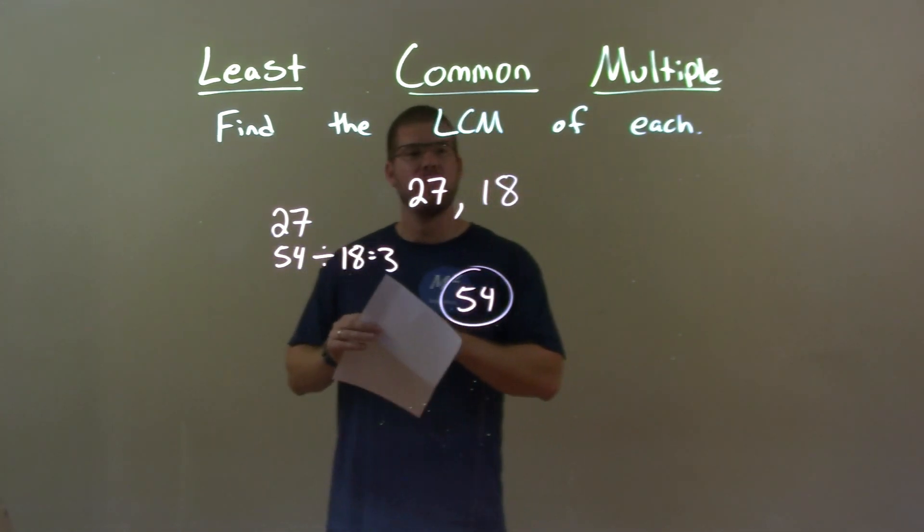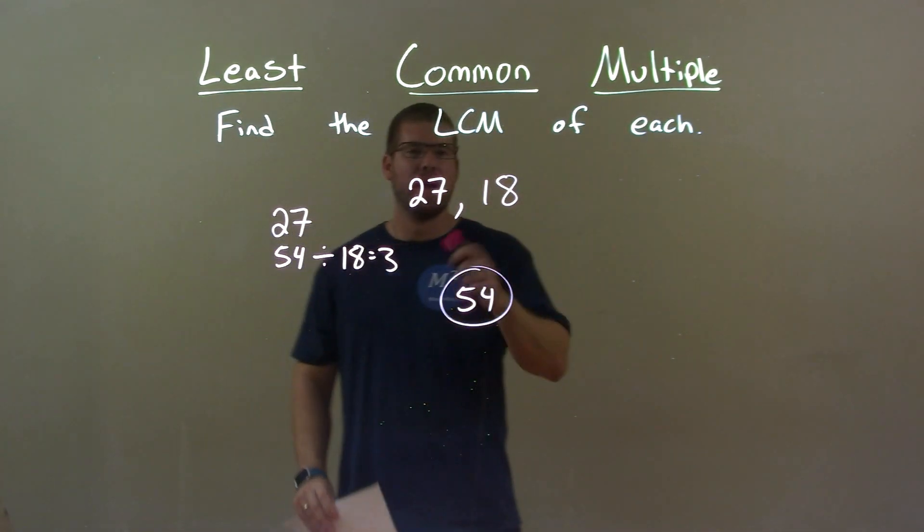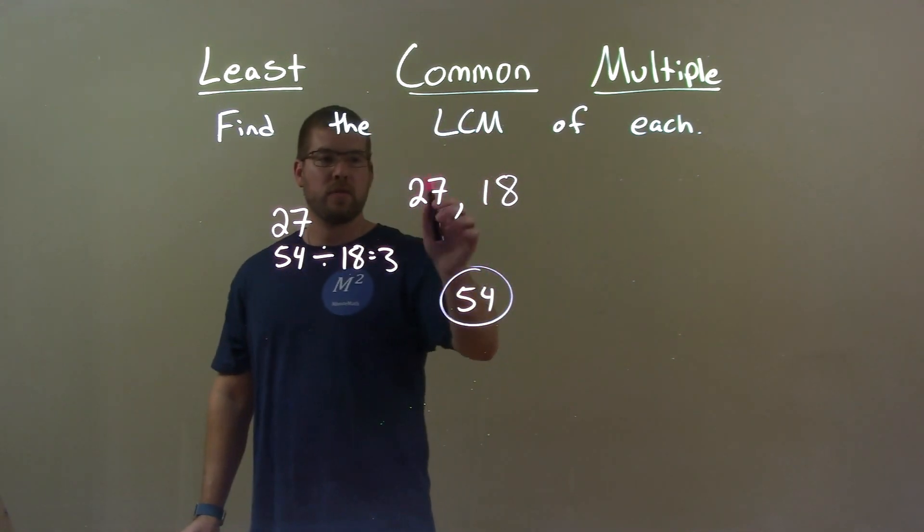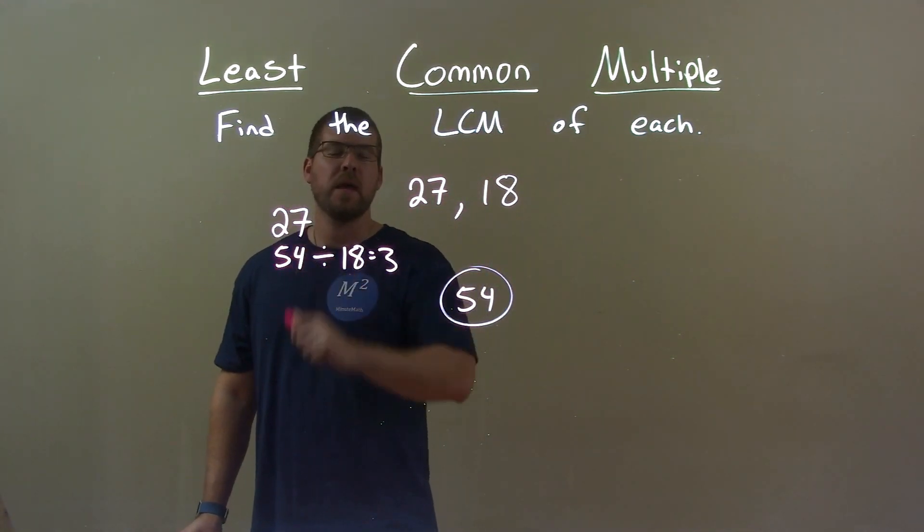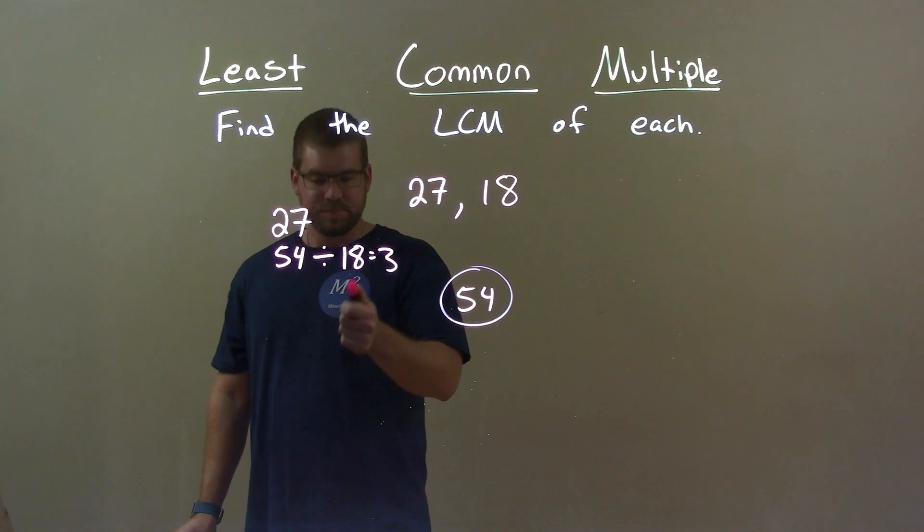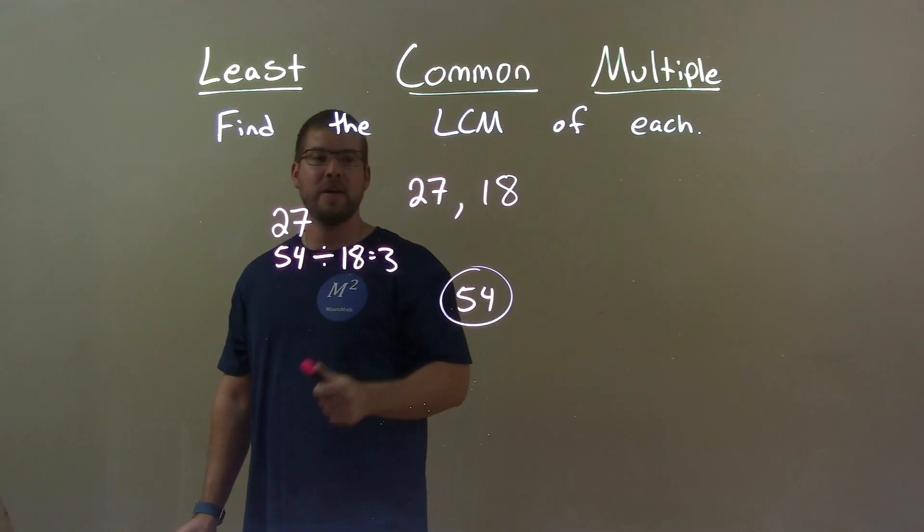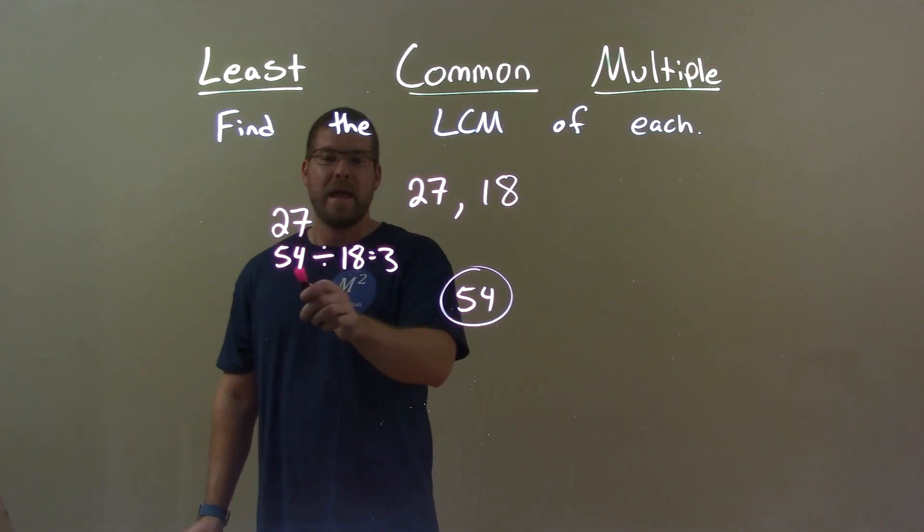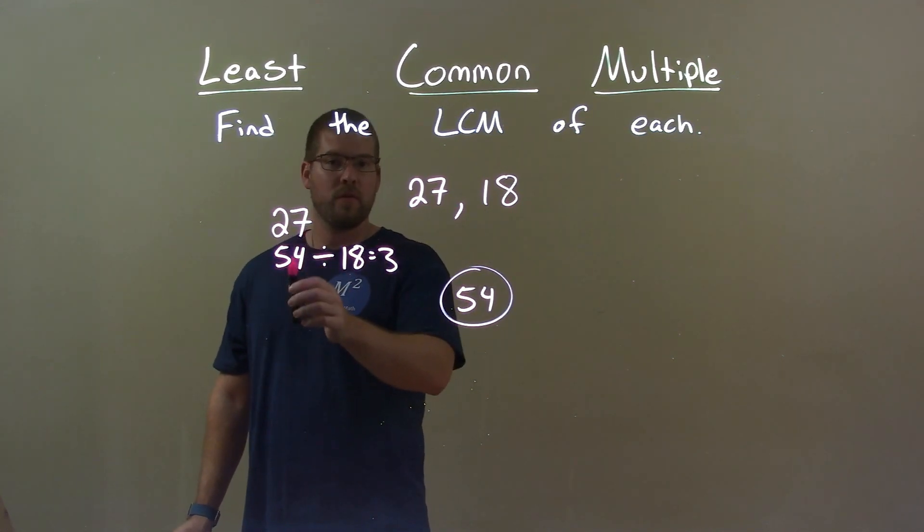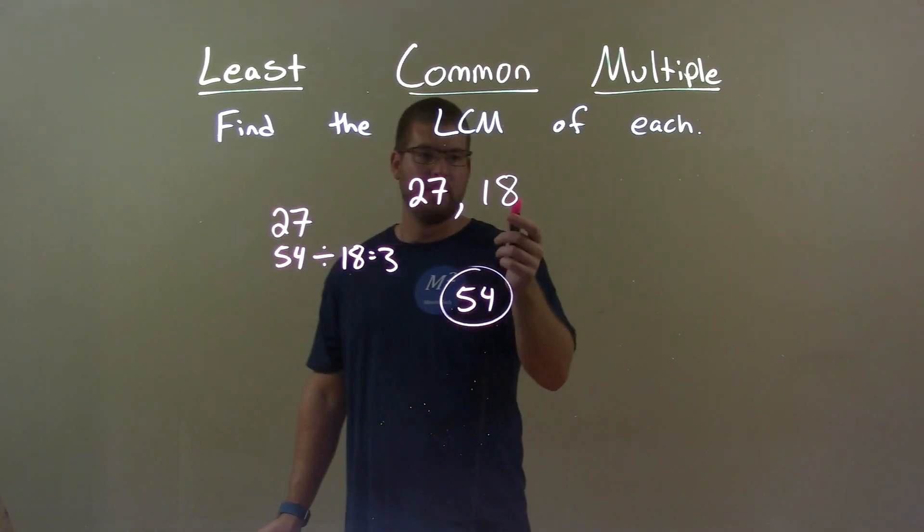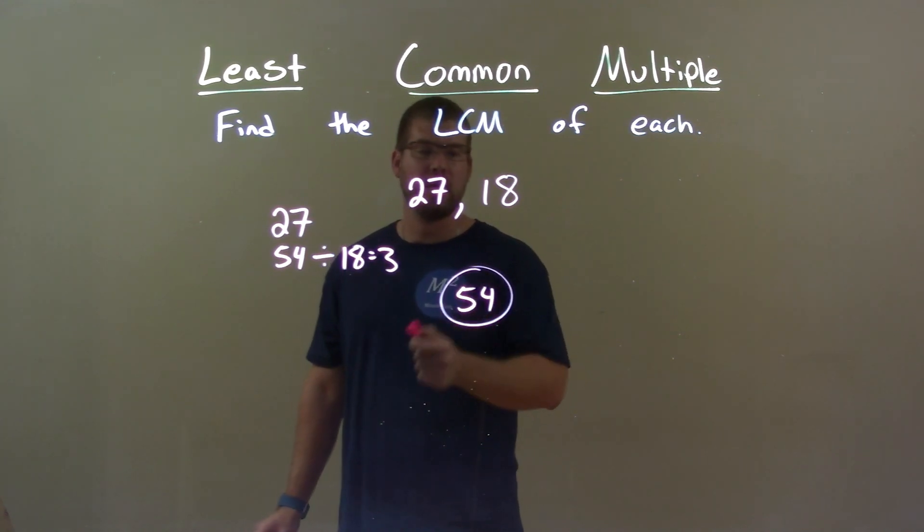So quick recap, we're given 27 and 18, and we find the LCM. Well, I go through the factors of the larger number, which is 27, and find the multiples of 27, and we saw 18, the smallest one of those multiples was 54, that 18 going to 54, so my final answer here is just 54.